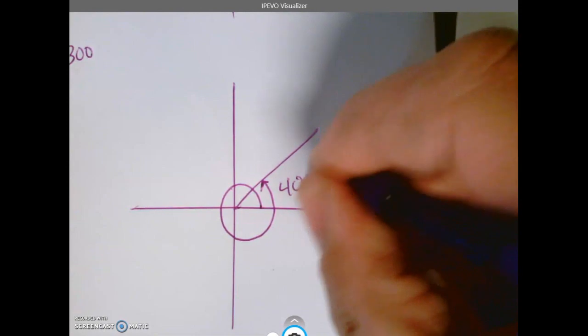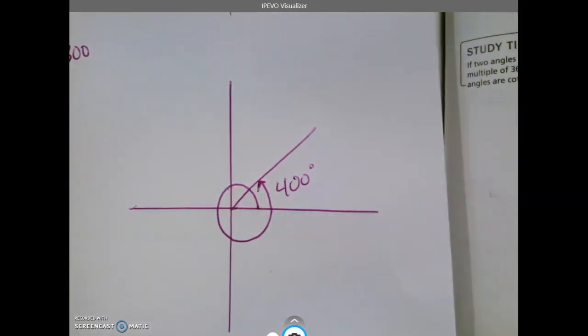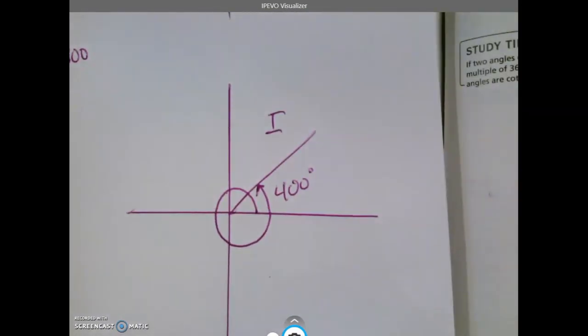That would be in standard position. We'd say 400 degrees is in quadrant one. All righty, thanks for watching.